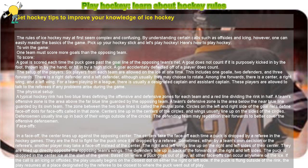The puck is dropped at center ice at the start of the game. Based on where a puck goes out of play, all other face-offs can occur anywhere on the ice. If the call is an icing or offsides, the play usually begins on the closest dot on either the right or left side. If the puck is flung outside of the rink, the play resumes at a place designated by the referee to be closest to where the puck went out of play.